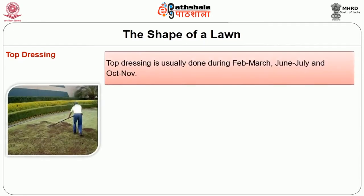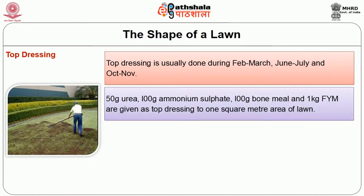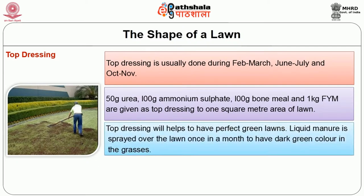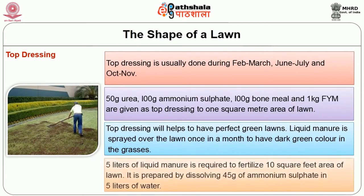Then top dressing. Top dressing is usually done during February to March, or June to July, or October to November. 50 grams of urea, 100 grams of ammonium sulphate, 100 grams of bone meal and 1 kg of FYM are given as top dressing to 1 square meter area of lawn. Top dressing will help to have perfect green lawns. Liquid manure is sprayed over the lawn once a month to have dark green color in the grasses. 5 litres of liquid manure is required to fertilize 10 square feet area of lawn, prepared by dissolving 45 grams of ammonium sulphate in 5 litres of water.